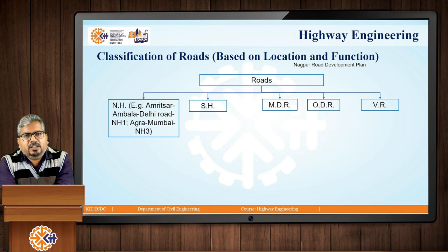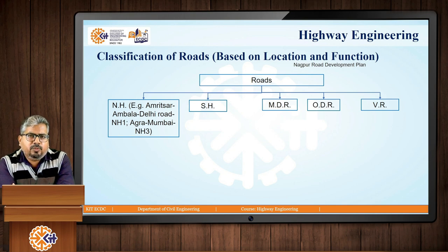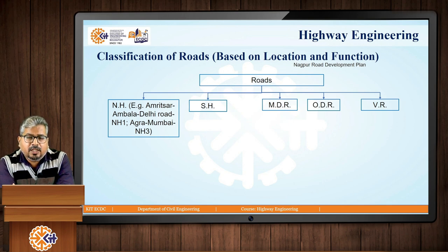National highways are the main branches of roads running along the entire length and breadth of India. They connect important ports, large industries, tourist centers, and state capitals. They also provide paths for strategic movement of Indian defense forces. The responsibility of construction and maintenance is with the central government. Examples include the Amritsar–Rambala–Delhi road as National Highway 1 and the Agra–Mumbai road as National Highway 3.